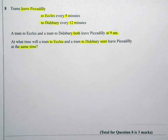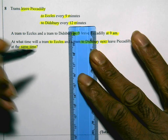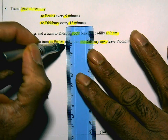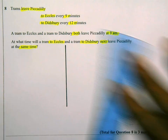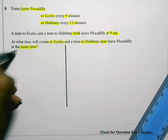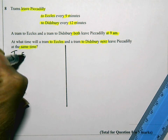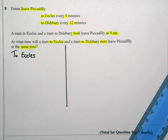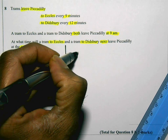This is very familiar to a question which came up in a previous paper. I'm going to use the same method. I'm actually going to split the question area into two, and on one side I'm going to put 'to Eccles' and on the other side I'm going to put 'to Didsbury'.